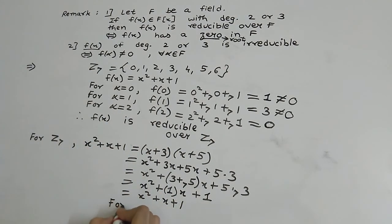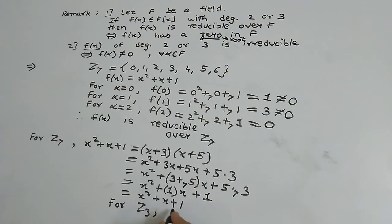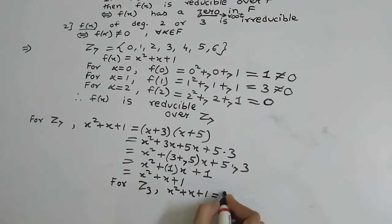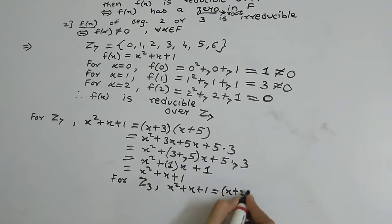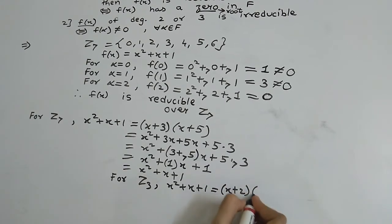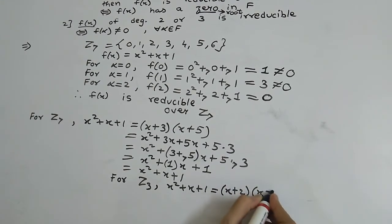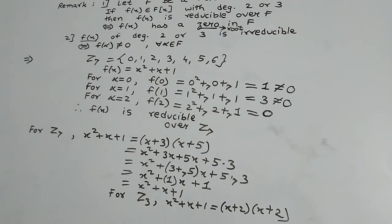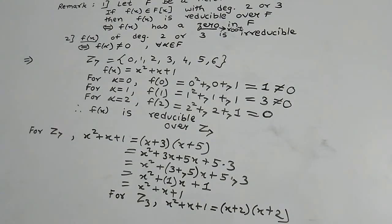For Z₃, x² + x + 1 can be written as (x + 2)(x + 2). So friends, if you like my video then please don't forget to subscribe to my channel. Thank you.